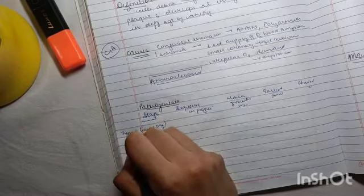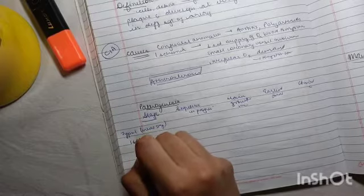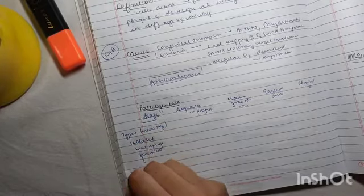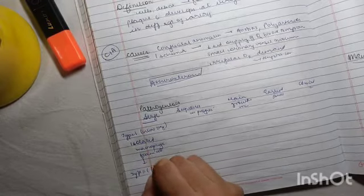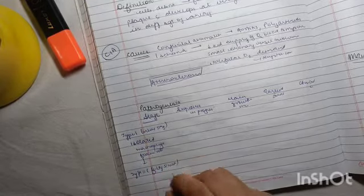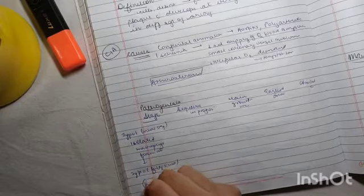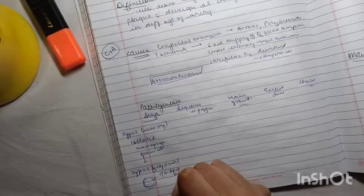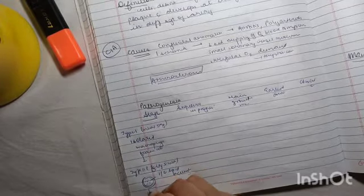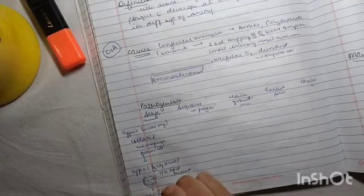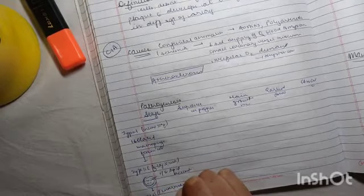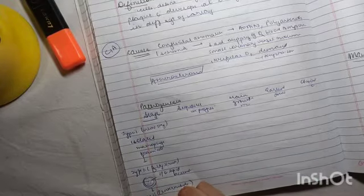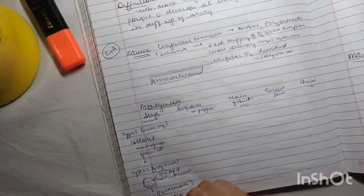Type 2 is the fatty streak stage with intracellular lipid accumulation. Type 3 is the intermediate stage with Type 2 changes plus small extracellular lipid accumulation - first it was intracellular, now it's extracellular.